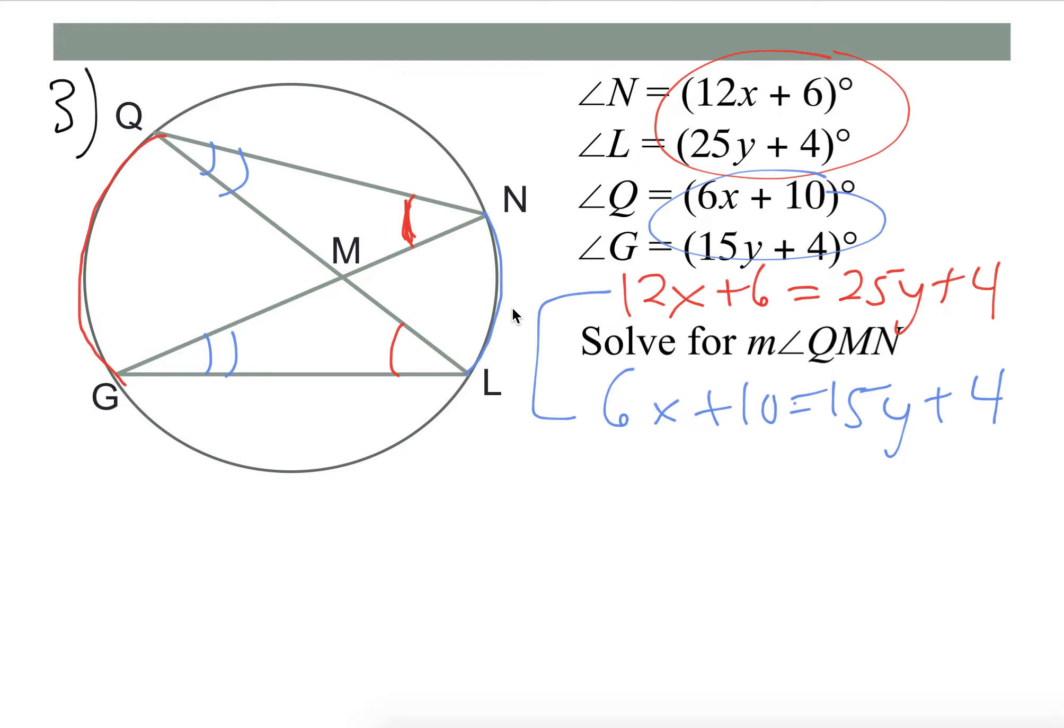All right, so now notice, like a lot of the problems we've done all year, we have a resulting system of equations. So a couple ways you could do it. I would just get your x's and y's on one side and then your constants to the other side. So if you do that, I'm not going to run through that because we've done systems a bunch, but if you do that you get x equals 4 and y equals 2.